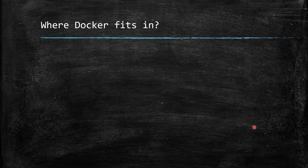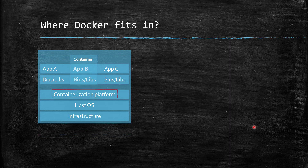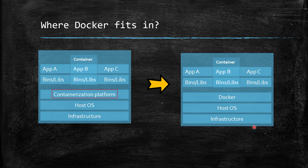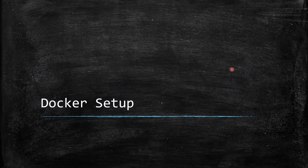So where does Docker fit in? Docker is nothing but a containerization platform. It's a company and project that gives us this containerization platform. Using Docker you can build, deploy, and share your app using containers. We'll look at Docker's architecture in detail in future videos. In this video, we'll just get an idea of what Docker is, where it fits in, and how to install it. Let's set up Docker in a Windows environment first, then we'll move to Linux.